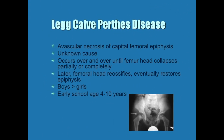The next disorder is Legg-Calvé-Perthes disease — be careful when you type this because autocorrect will change the spelling. This is an interesting disease in which a child develops avascular necrosis at the head of the femur. We don't know why it happens, but it occurs repeatedly until finally the head of the femur completely or partially collapses.